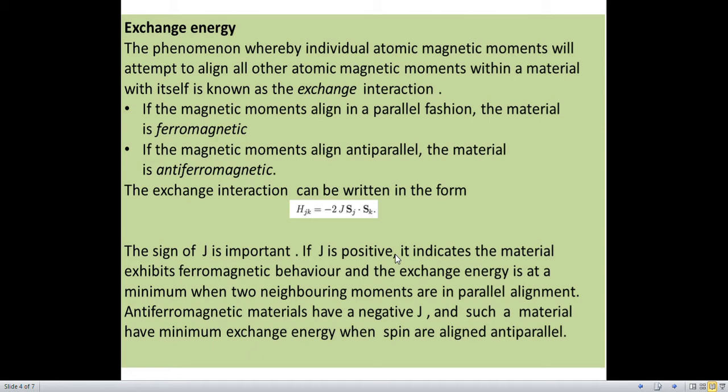Now, if these magnetic moments — all the magnetic moments — align in a parallel fashion, then the material will be ferromagnetic in nature. Considering the second case, when the magnetic moments align anti-parallel, the material will be anti-ferromagnetic in nature. Suppose we have two spins, one denoted by S_J and the other denoted by S_K. Taking only nearest-neighbor interaction and ignoring higher-order interactions, the exchange interaction between the two spins will be H_JK = −2J (S_J · S_K). Here J is the interaction parameter.